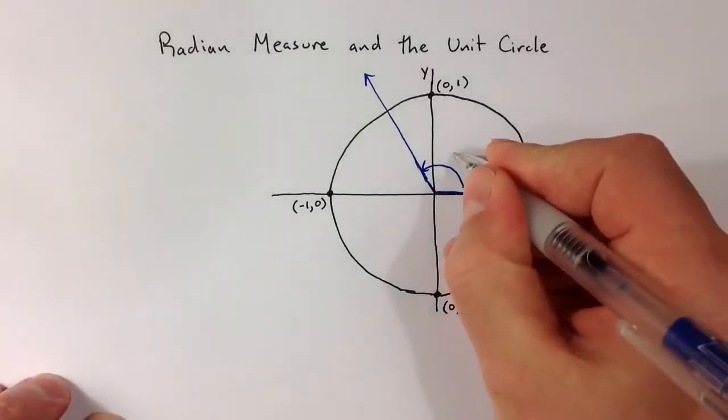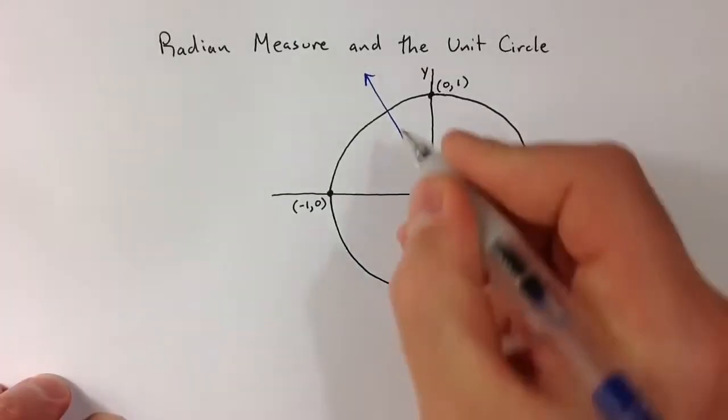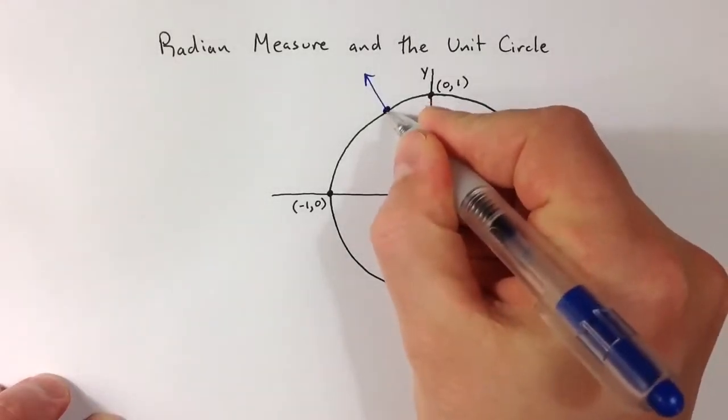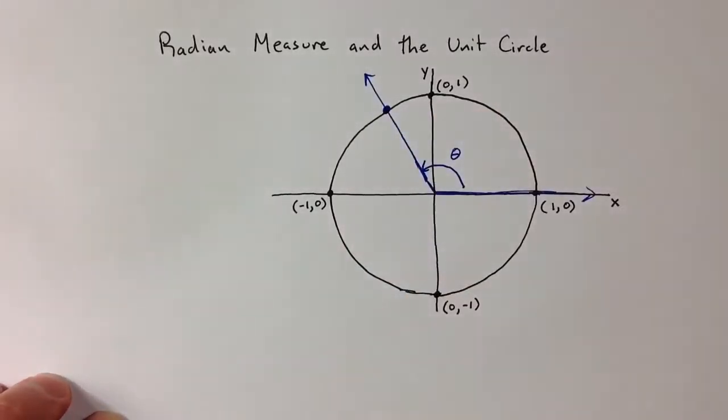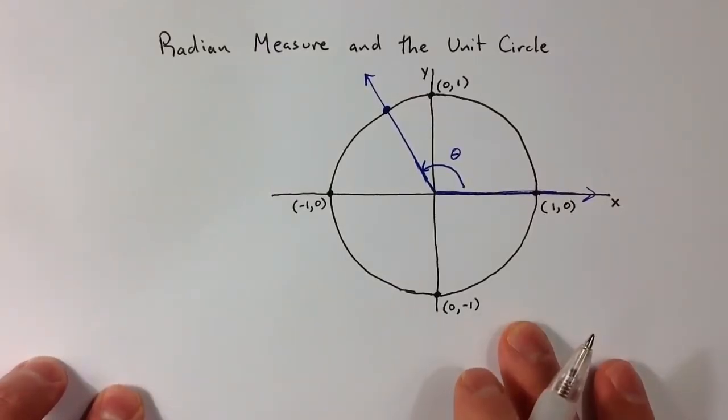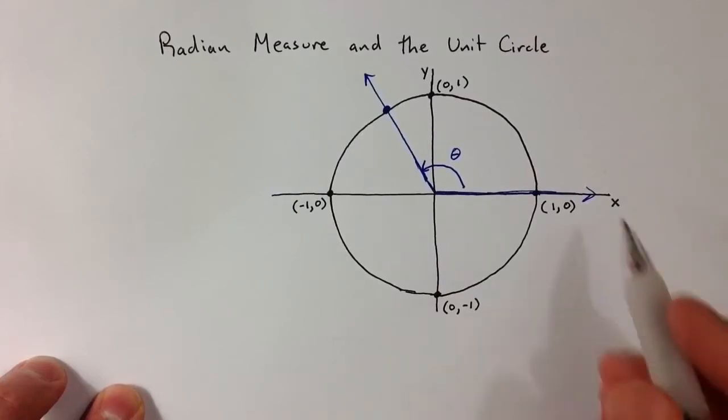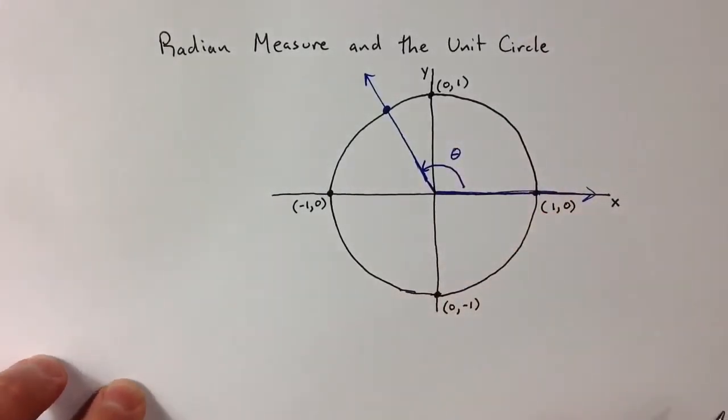An angle theta in standard position is going to cross the unit circle in exactly one place. And so a natural way to measure the size of the angle, a more natural way than thinking of degrees, thinking of splitting a circle into 360 degrees.